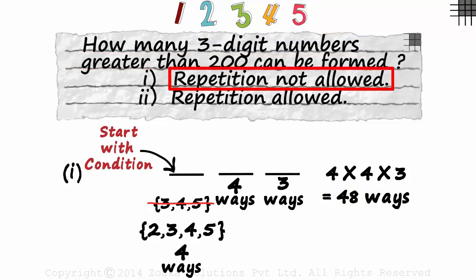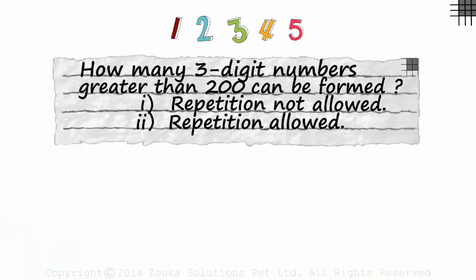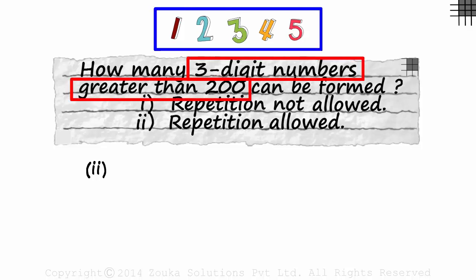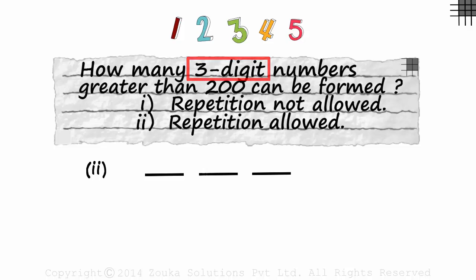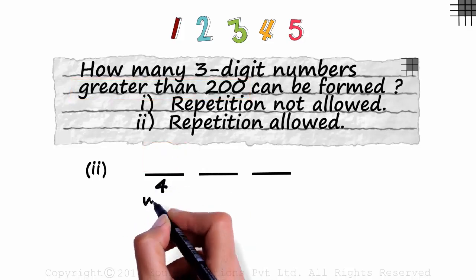Will the answer change if repetition is allowed? Let's move to a new page to answer the second part. Using these five digits, how many three-digit numbers greater than 200 can be formed if repetition is allowed? We make three slots to represent the three digits. In how many ways can we fill the hundreds place? As the number has to be greater than 200, we can fill it with 2, 3, 4, or 5 — four ways.